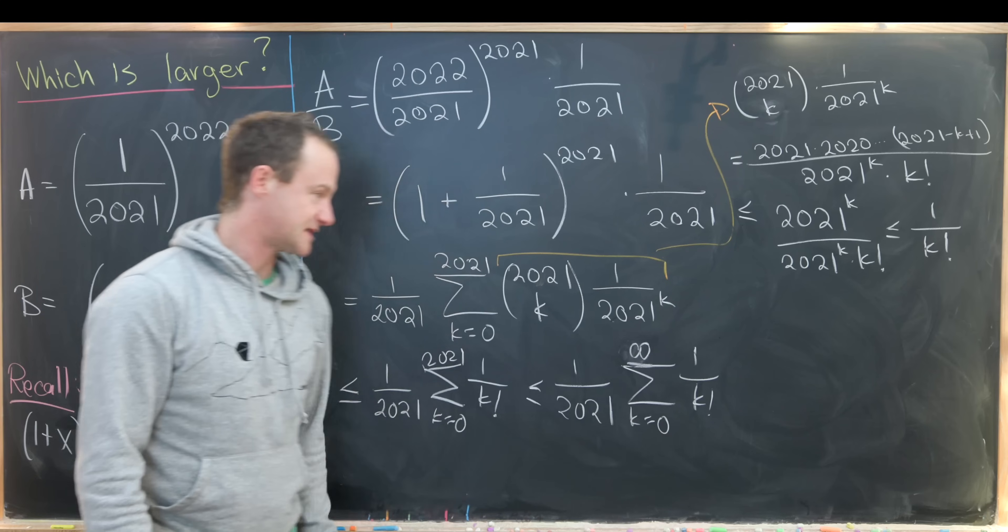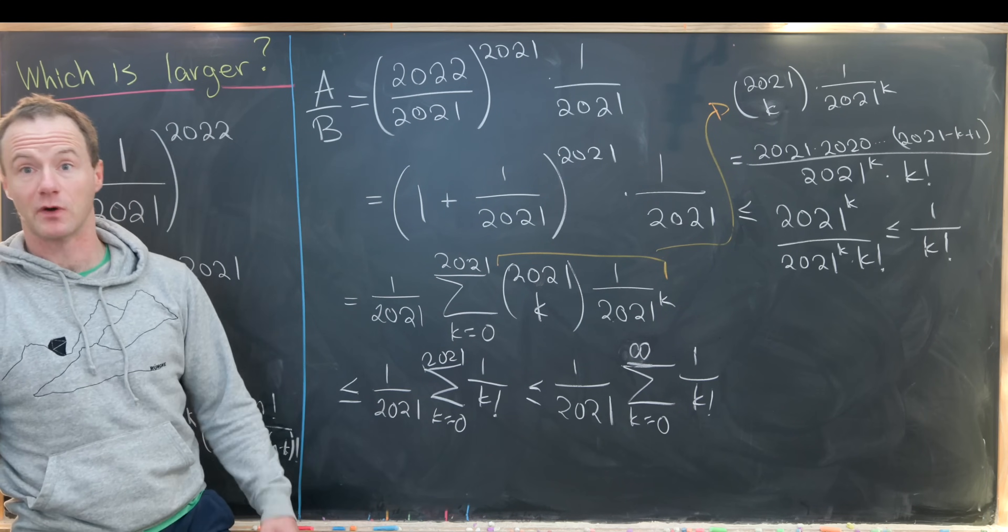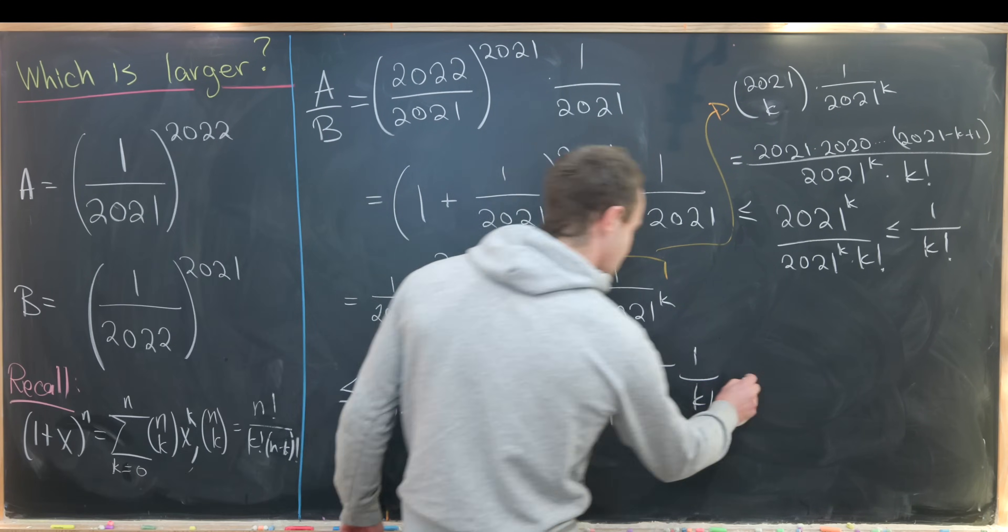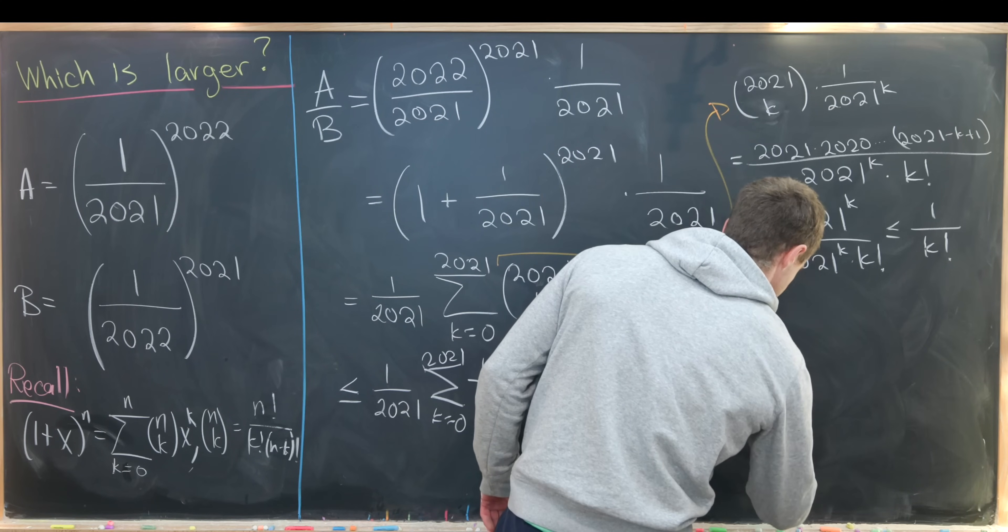But now looking at this, that's a sum of a well-known number, Euler's number in fact. So this is equal to e over 2021.